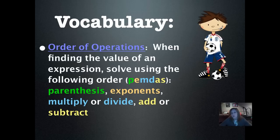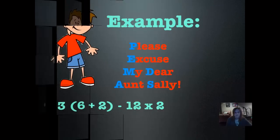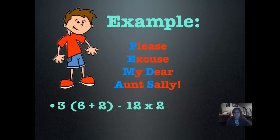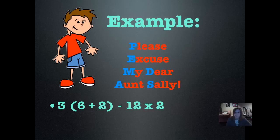That means that in a problem, if you see division before multiplication, you do it first. If you see multiplication before division, you do that first. But multiplication or division will always come before either addition or subtraction. We always solve using the order of operations so that every time someone solves an expression, they get the same answer as another person who would solve it.